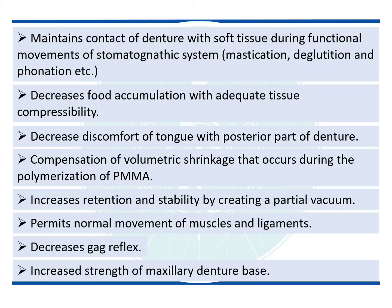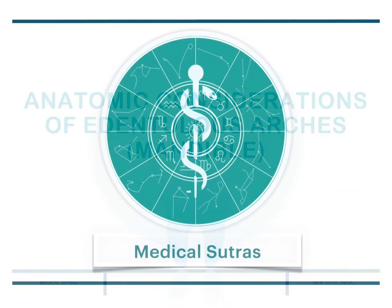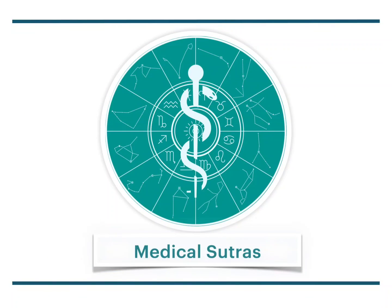This concludes our discussion about the anatomic landmarks of the maxilla. In the upcoming video, we will talk about the anatomic considerations of the lower edentulous arch — the mandible. If you found this video helpful and informative, please like the video, share it with your friends, and subscribe to the channel for more such content. You can also download our app Medical Sutras for detailed notes on dental and medical topics, and comment below any topic you want covered in future.